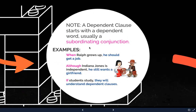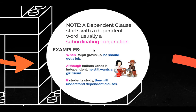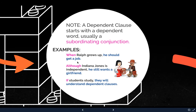Again, here we have some examples. There's a dependent clause at the beginning and then an independent clause at the end. 'He should get a job' — that's independent, that's a sentence by itself. 'When Ralph grows up' — that's a dependent clause; it is not a sentence by itself. But if you combine it together with an independent clause, now we have a complex sentence. We have three complex sentences here.